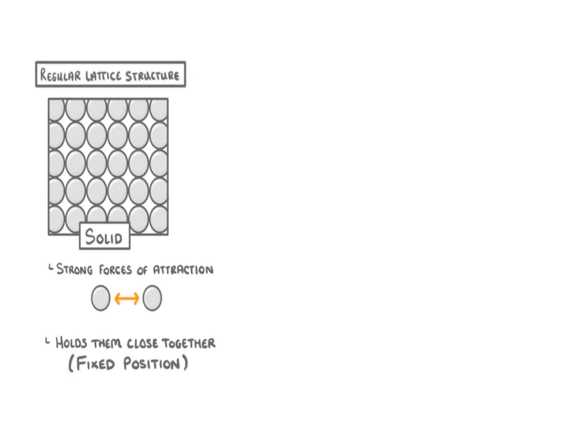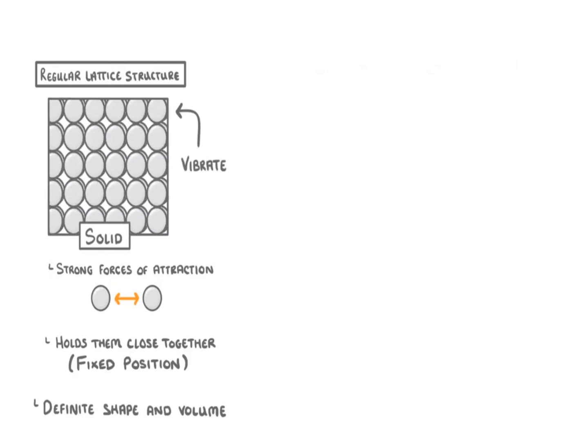In solids, there are strong forces of attraction between the particles which hold them all close together in a fixed position to form a regular lattice structure. Because the particles are fixed, the overall substance keeps a definite shape and volume, so it can't flow like a liquid. The particles can vibrate though, so you can imagine them constantly jostling against one another.